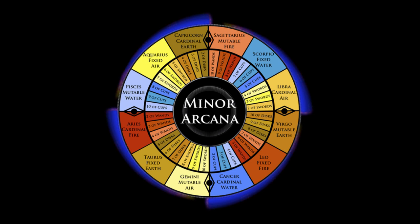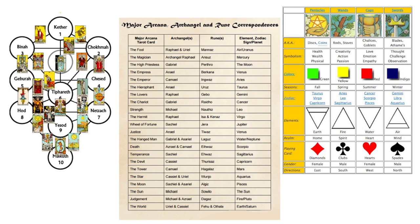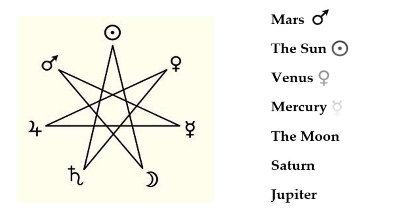We can then go a step further and add even another dimension of awareness when we look at each card's planetary association. There are, of course, even more layers than elements, astrological associations and planetary correspondences — such as elemental expressions, the Kabbalistic worlds encompassed in the tree of life, angel associations or archetypical intelligences, seasons, runes, and more. But for the purposes of what we're going to look at today, we're going to stick to just these for simplicity and extend these principles in other tutorials on this channel.